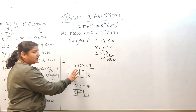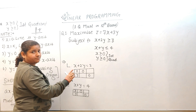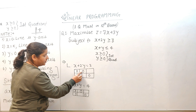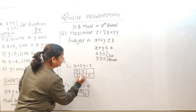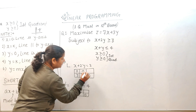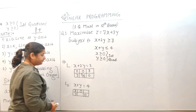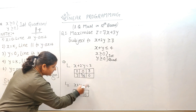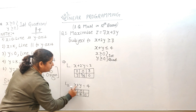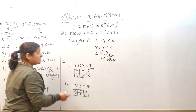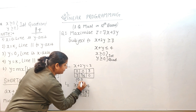To make the question simple: for the first equation, put x = 0 to get y = 3/2; put y = 0 to get x = 3. For the second equation, put x = 0 to get y = 4; put y = 0 to get x = 4. We now have four points: (0, 3/2), (3, 0), (0, 4), and (4, 0).